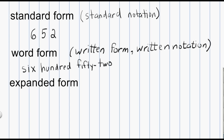The third form of a whole number is the expanded form. Think for a moment about what the word expanded means — if we expand something, we cause it to grow or get larger. In this case, expanded does not mean we increase the value of the number, but we're going to take that number written in standard form and expand it out so that it looks larger on paper. We'll continue to work with the number 652, and we'll convert that standard form into the expanded form.